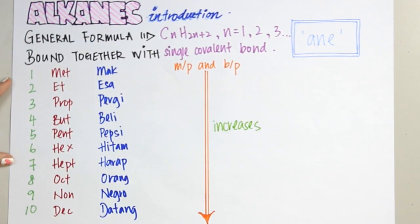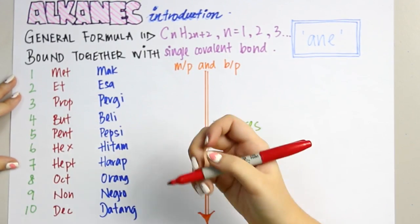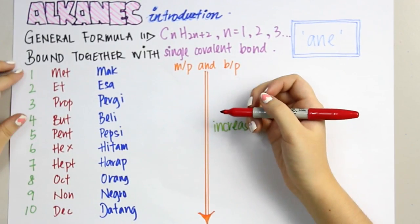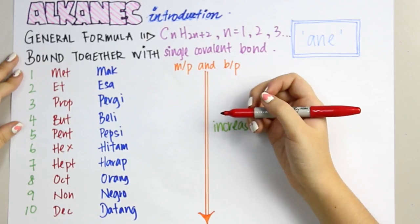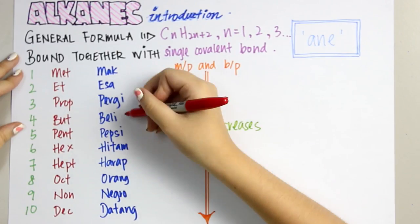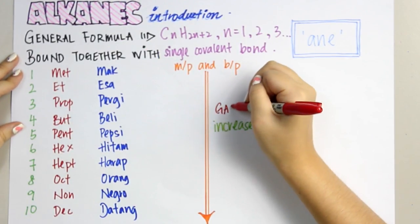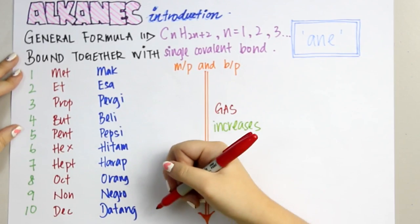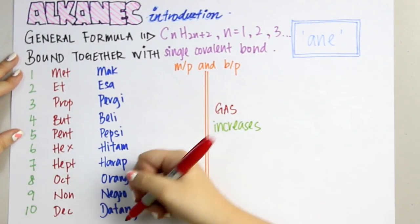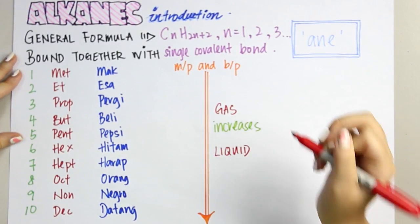We separate from butane: above butane are gases, below butane—starting from pentane to decane—are liquids.